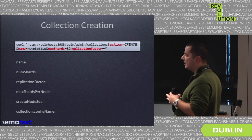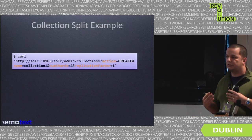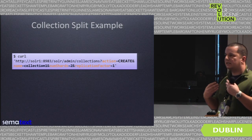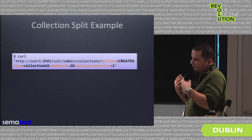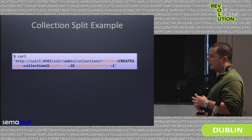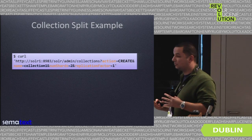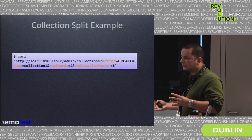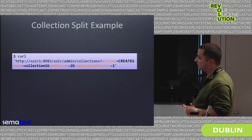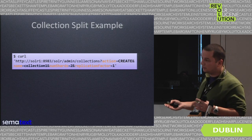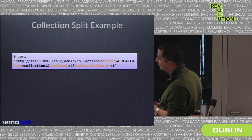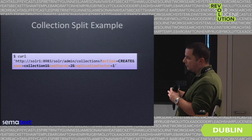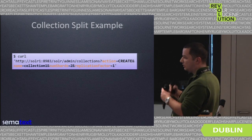I mentioned splitting. Imagine a situation where you have a collection and you see that your servers are stressed out — indexing is not going well, your machine just can't keep up. Re-indexing is one option: create another collection with more shards, re-index the data from scratch, and you're done. However, that's not always an option.